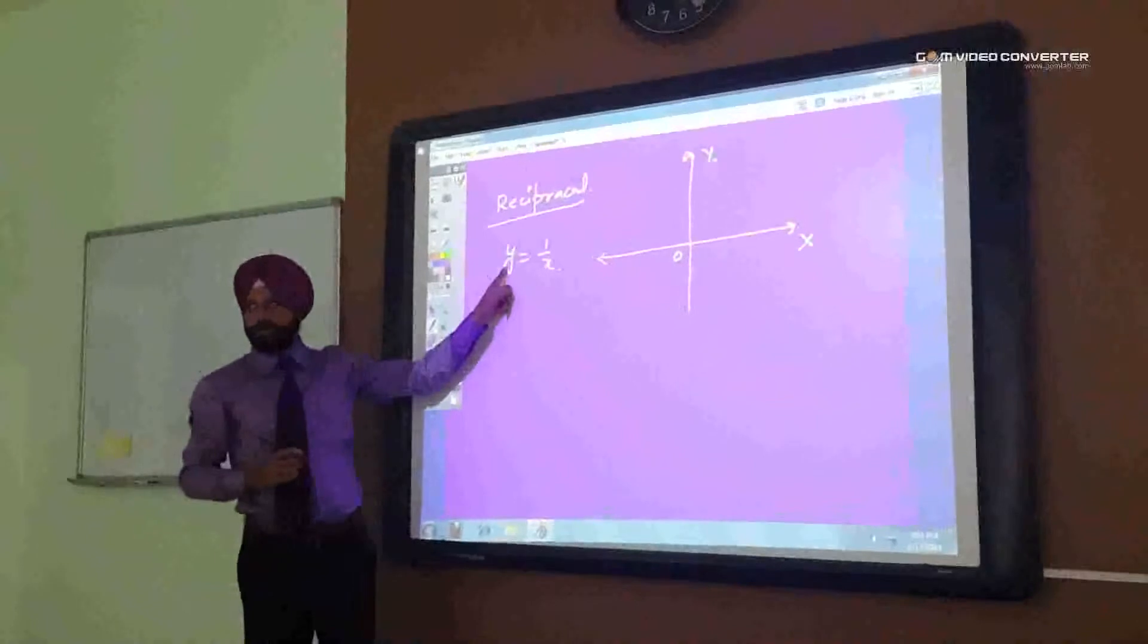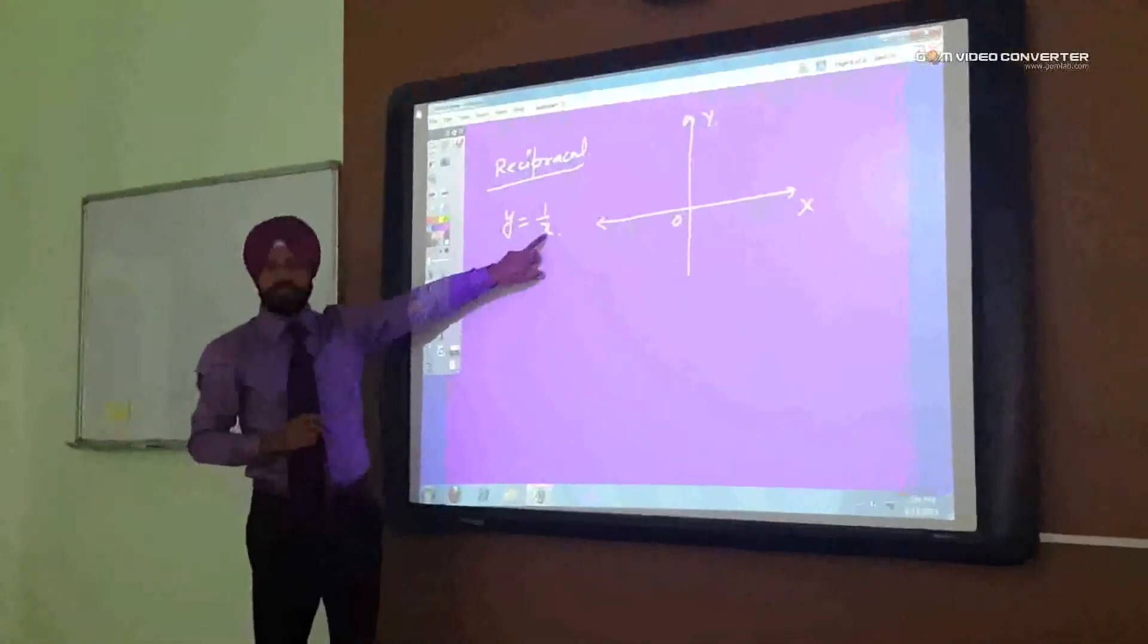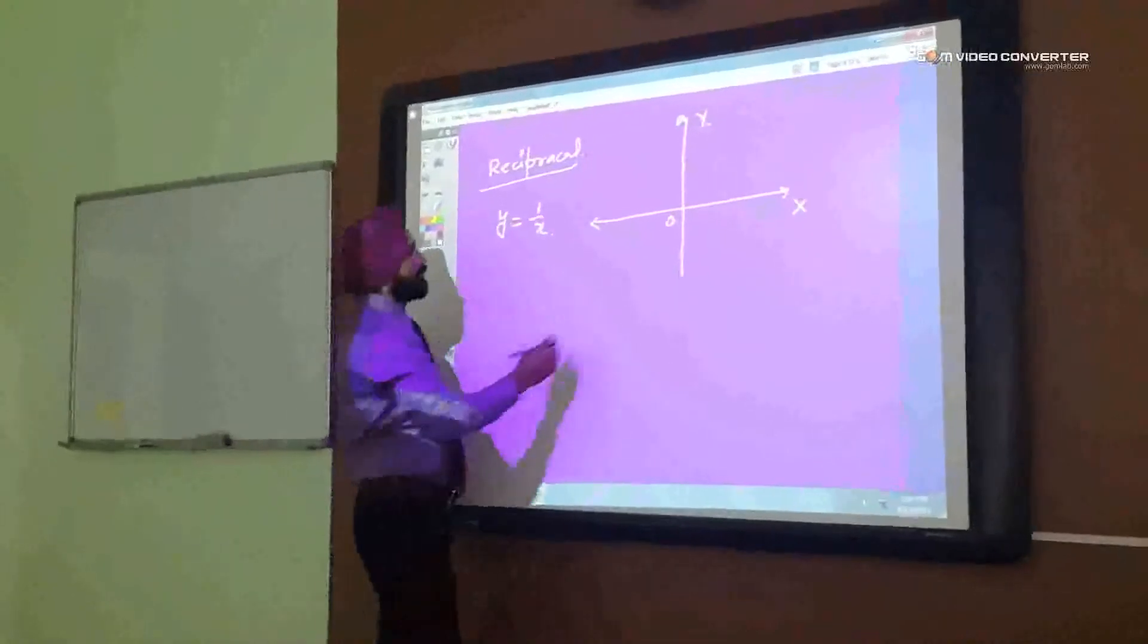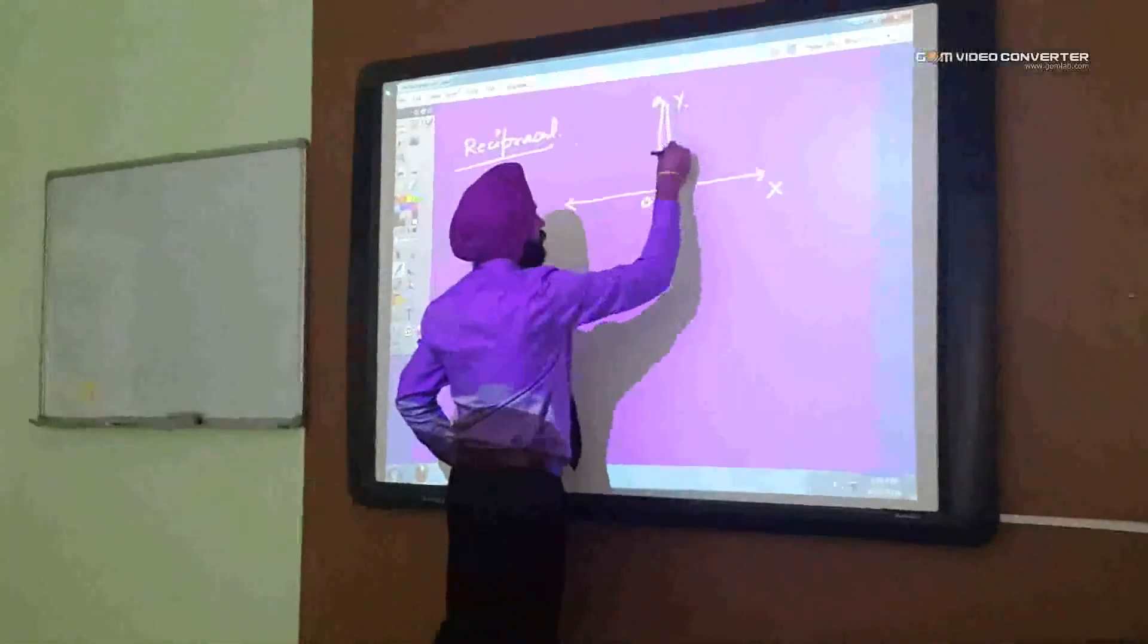y is maximum. For maximum value of x, y is minimum. Okay? So, the curve will be like this.